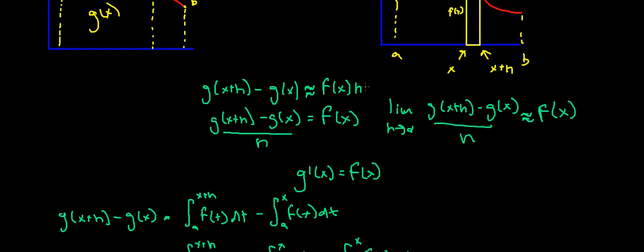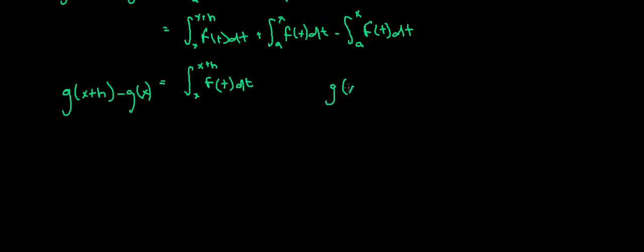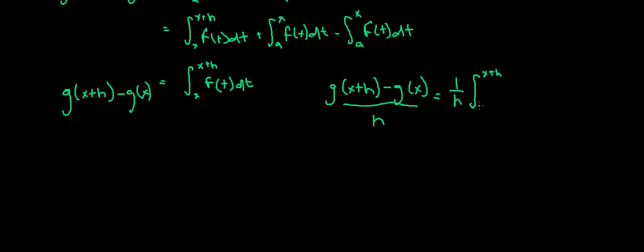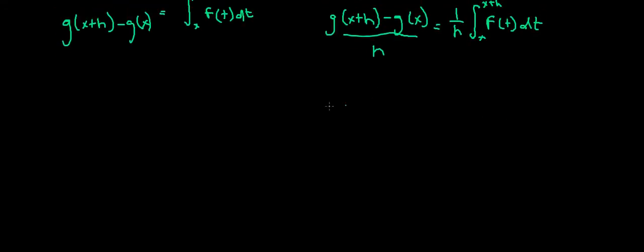So I've done that. Next, I need to find a way to take the limit as h goes to 0 and have that limit mean something. So I can divide both sides by h here. I need a way of evaluating the limit as h goes to zero, because I can't really do that directly. So what I'm going to do is use the Extreme Value Theorem on the interval x to x plus h.